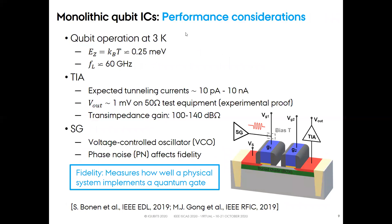Qubit operation at 3 Kelvin requires an energy separation which is at least equal to 0.25 meV, that is the thermal energy kBT at 3 Kelvin. This corresponds to a Larmor frequency of approximately 60 GHz, which is the value that we consider in this study. The transimpedance amplifier must provide a transimpedance gain between 100 and 140 dB-ohm in order to amplify tunneling currents in the order of 10 pA to 10 nA and convert them to an output voltage with a swing in the order of 1 mV on 50 ohm test equipment for experimental proof.